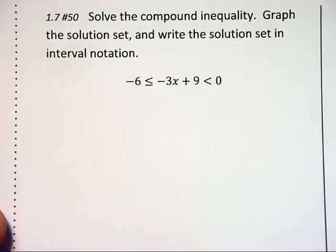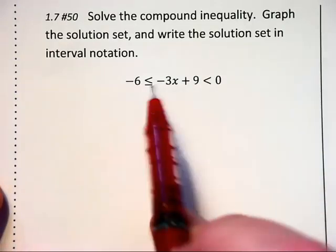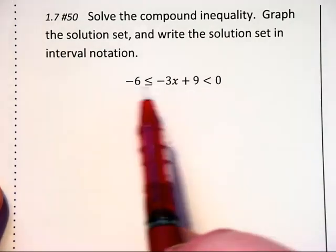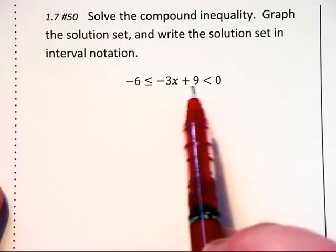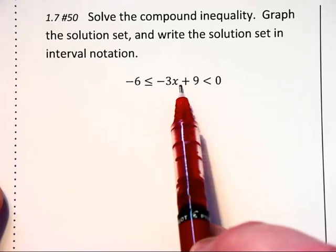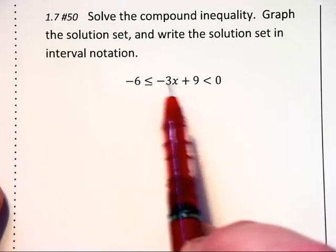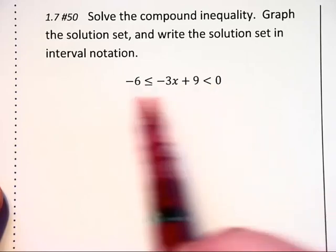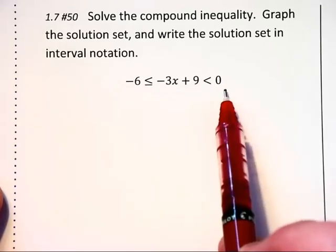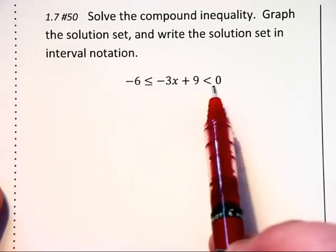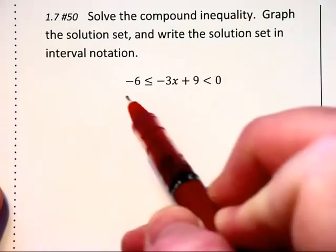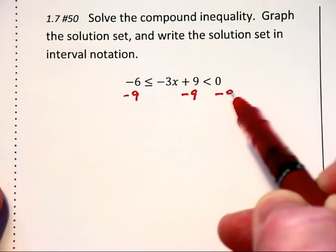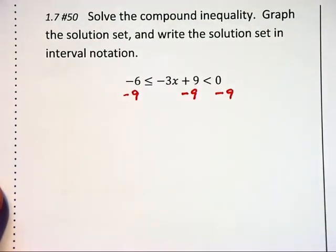Let's solve this next inequality. It is a compound inequality. Technically, we have the left side, negative 6, is less than or equal to negative 3x plus 9, AND the middle, negative 3x plus 9, is less than 0. But instead of writing it as two inequalities joined by AND, we write it as this compound inequality. And we can solve each at the same time by, in this case, subtracting 9 in all three parts.